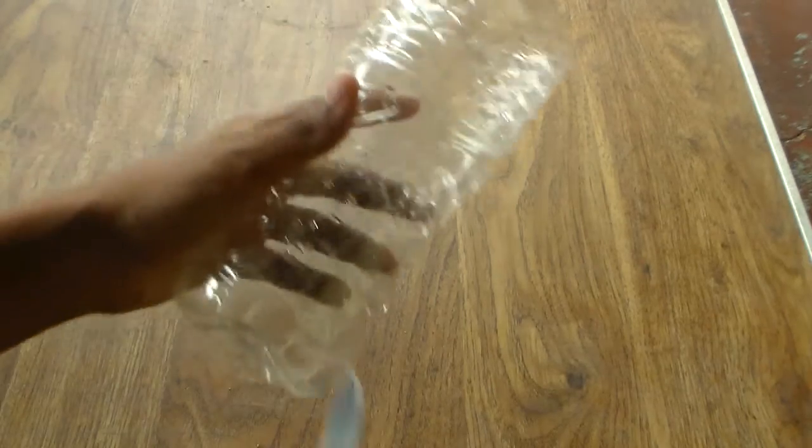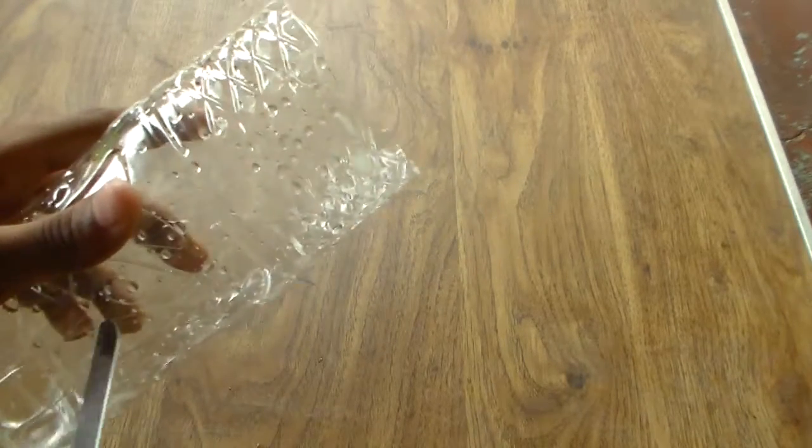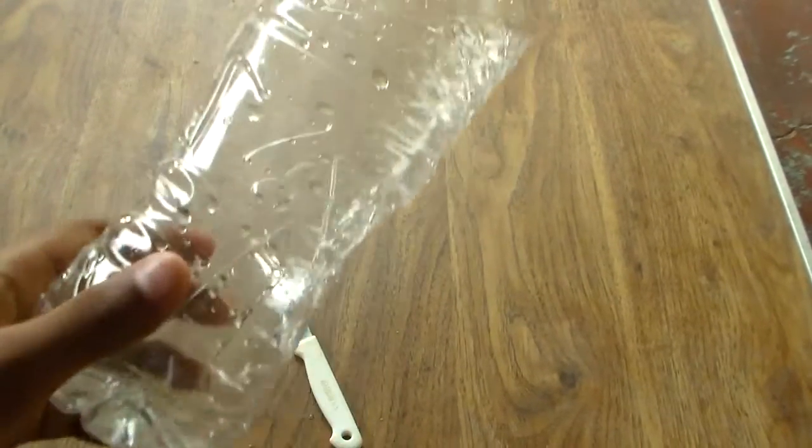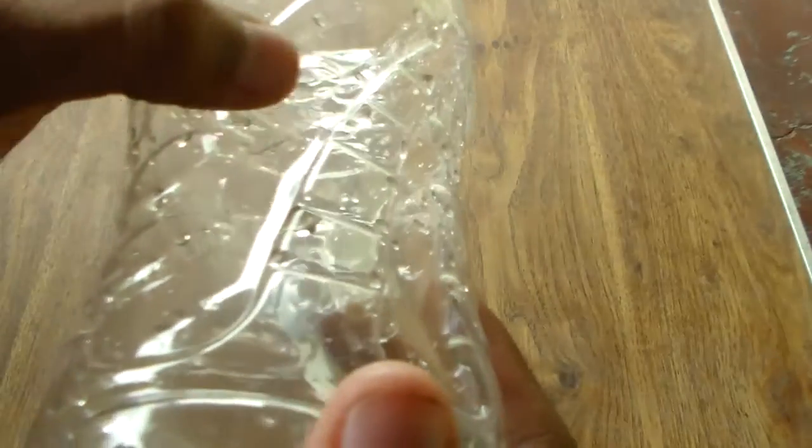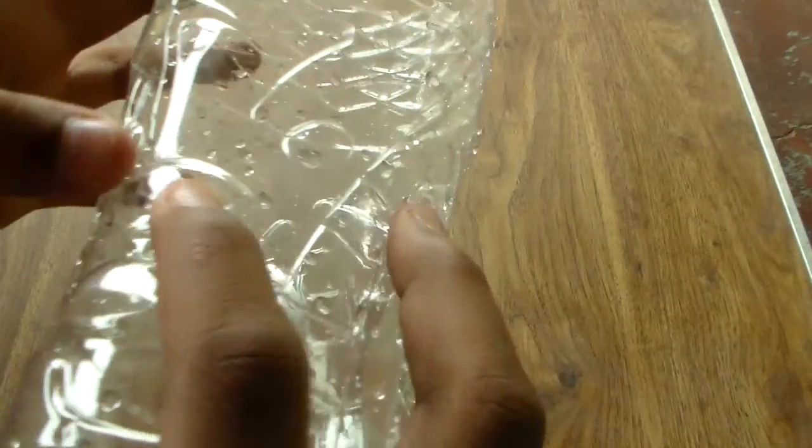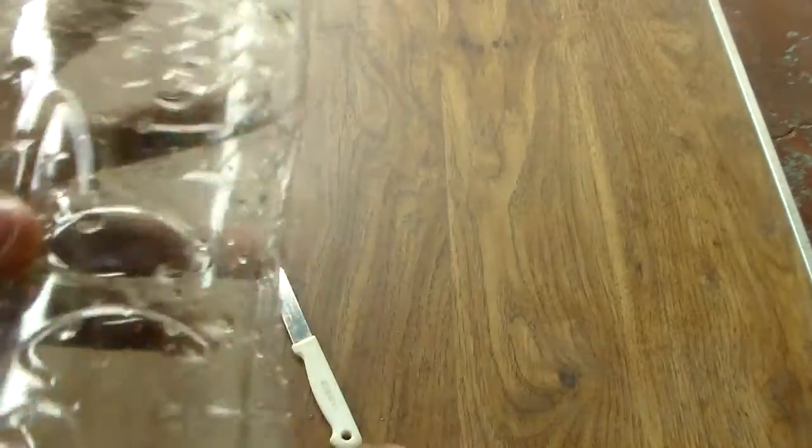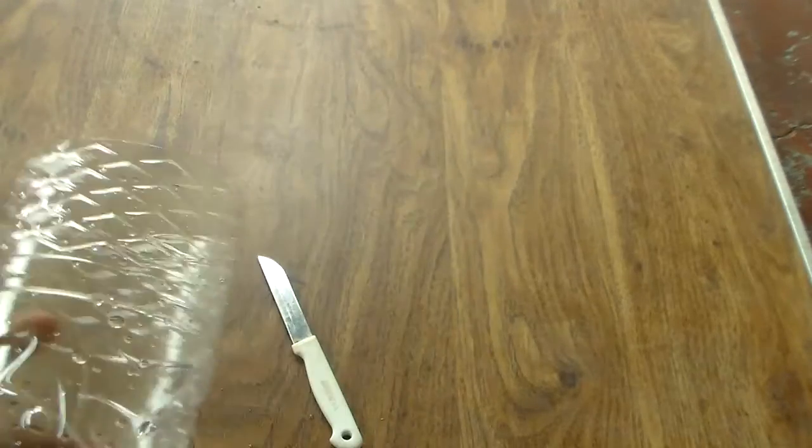So next you want to cut holes in the bottle. I'll be right back when I'm done. Okay guys, as you can see, I cut holes on the bottle along the side here, but not too big of holes, so the fish won't escape.